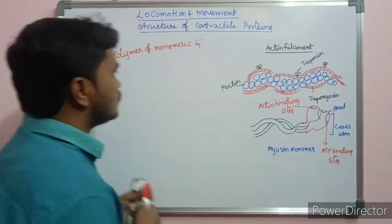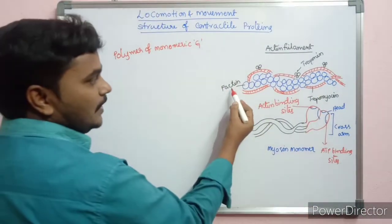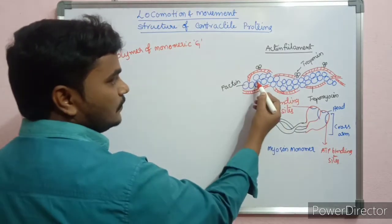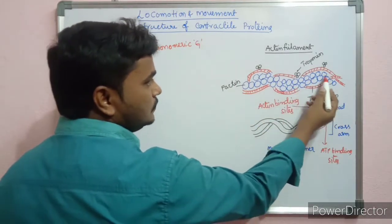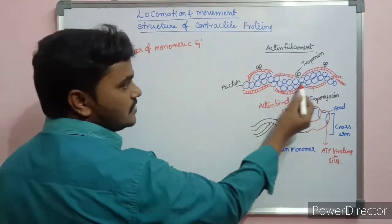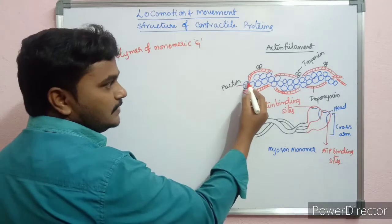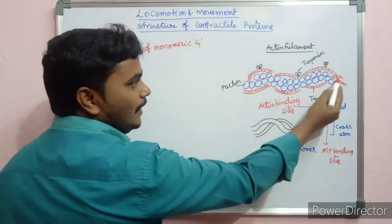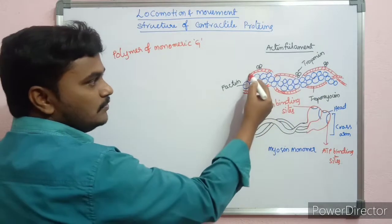First, actin. Actin contains globular molecules — these are G-actin molecules. These G-actin monomers form filamentous structures called F-actin. The F-actin filaments run parallel, and along them there is tropomyosin, shown here in red.